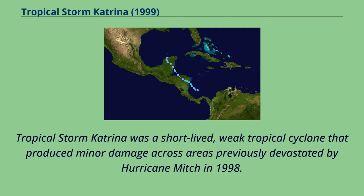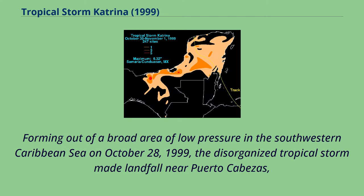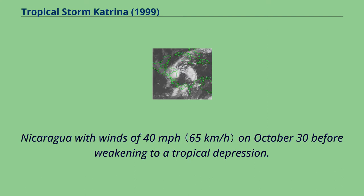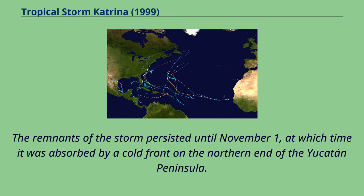Tropical Storm Katrina was a short-lived, weak tropical cyclone that produced minor damage across areas previously devastated by Hurricane Mitch in 1998. Forming out of a broad area of low pressure in the southwestern Caribbean Sea on October 28, 1999, the disorganized tropical storm made landfall near Puerto Cabezas, Nicaragua with winds of 40 mph on October 30 before weakening to a tropical depression. The remnants of the storm persisted until November 1, at which time it was absorbed by a cold front on the northern end of the Yucatan Peninsula.